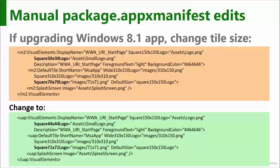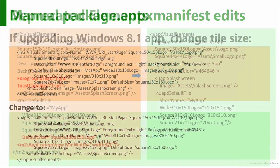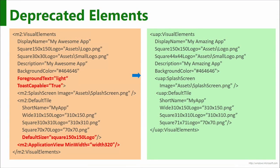If you're upgrading a Windows 8.1 store app rather than from phone, some tile assets have changed. For a store app it was Square 70×70 logo; now it's converged on the phone one, Square 71×71. That means there's only one set of assets to create, not a group for phone and a group for Windows. A few other elements have been deprecated — Foreground Text equals Light, and Toast Capable equals True. You no longer have to specify toast-capable in the manifest.